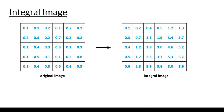Instead of using the original image, we are going to transform it into the integral image. A given pixel in the integral image is the sum of all the pixels to the left and above. For example, 1.2 equals 0.1 + 0.1 + 0.2 + 0.3 + 0.1 + 0.4. Let's take another example: this pixel is the sum of all the pixels in the original image to the left and above, so 5.3 equals the sum of all those values.